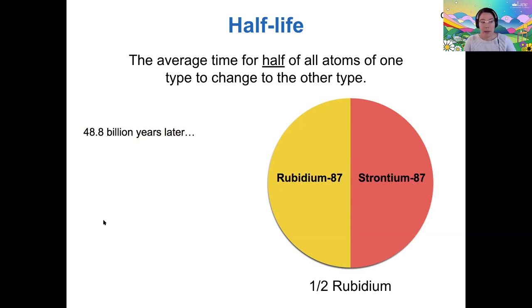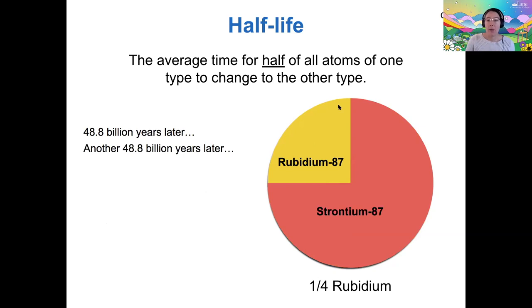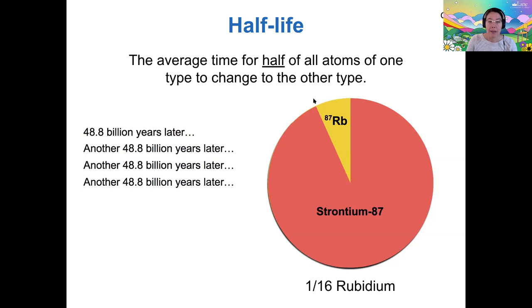48.8 billion years after that, half of what remained would also be converted to strontium. And so on and so on. Another 48.8 billion years would take away half of what remains. And the last half-life here would take away half of what remains. This happens over and over again. So by looking at the fraction of how much rubidium to how much strontium, I can figure out how many half-lives it took to get there.